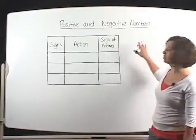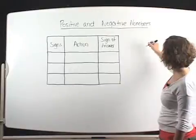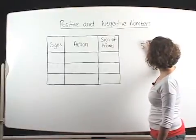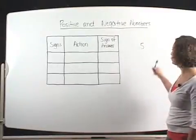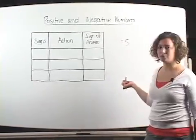We're going to start off today with positive and negative numbers. Now when you look at the number five, that number is actually positive and you could write it like this, positive five.